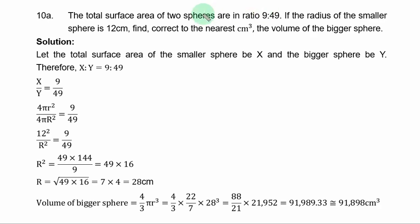Question 10A. The total surface area of two spheres are in ratio 9 to 49. If the radius of the smaller sphere is 12 cm, find correct to the nearest cubic centimeters the volume of the bigger sphere. The radius of the bigger sphere is needed before you can obtain the volume.